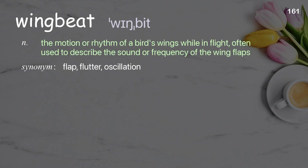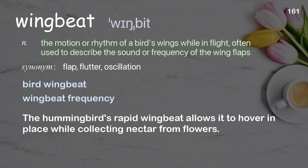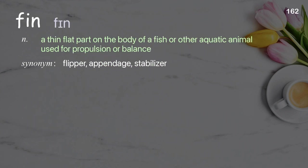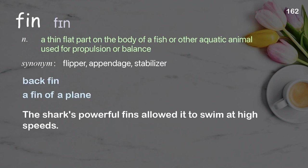Wing beat: the motion or rhythm of a bird's wings while in flight, often used to describe the sound or frequency of the wing flaps. Examples: bird wing beat, wing beat frequency. The hummingbird's rapid wing beat allows it to hover in place while collecting nectar from flowers. Fin: a thin, flat part on the body of a fish or other aquatic animal used for propulsion or balance. Examples: back fin, a fin of a plane. The shark's powerful fins allowed it to swim at high speeds.